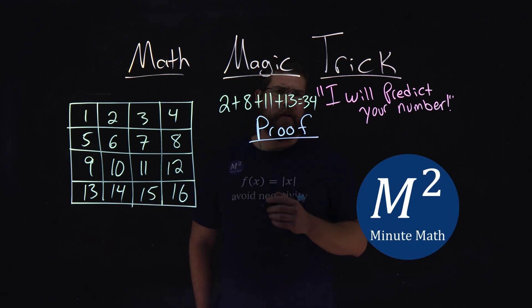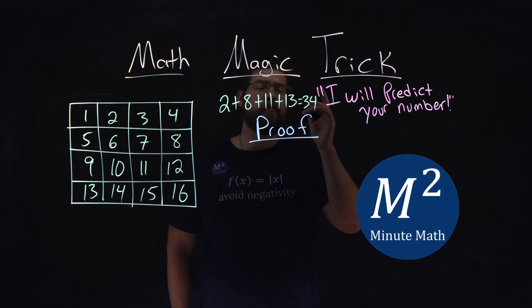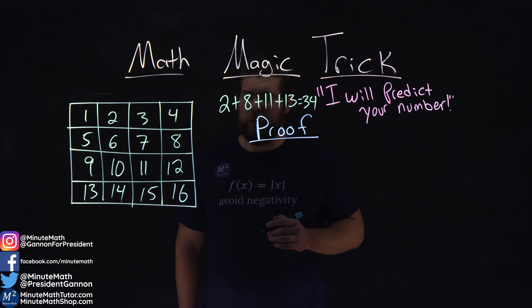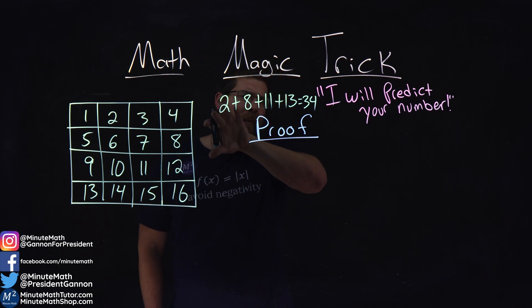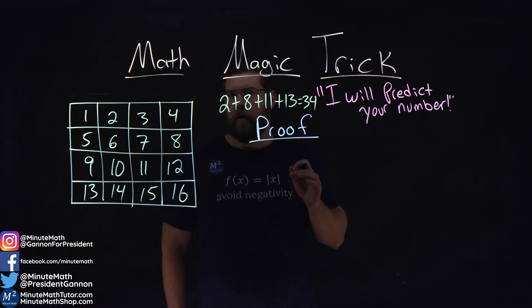Hi, I'm Sean Gannon, and this is MinuteMath. We have the math magic trick proof for you. If you remember from our last video, we said that when we add up all these numbers, it had to be 34.